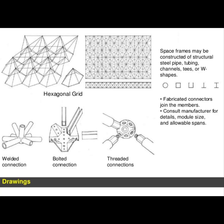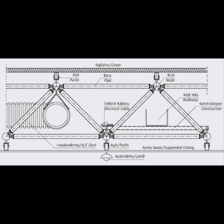Let's have a look at the connections and the types. We have three types: the threaded one, which is the same as in that structure; the bolted one; and the welded one. About the structure itself — it's a lightweight structure that gives us the ability to cover a huge area without any interruption from columns or structural members. The flexibility and strength of this structure come from the triangular shapes, which give the structure both flexibility and strength.